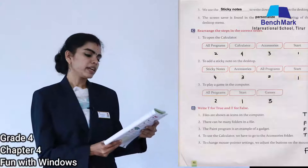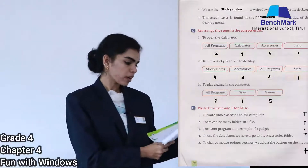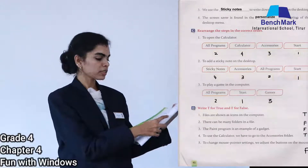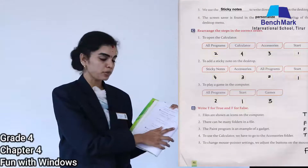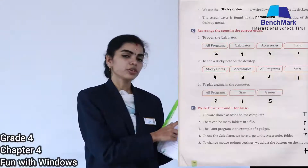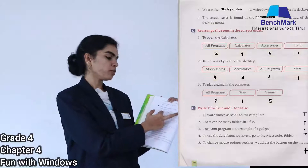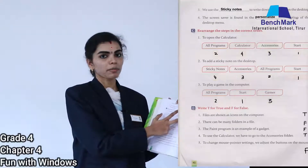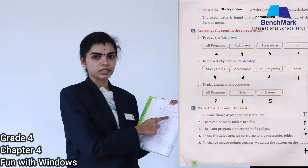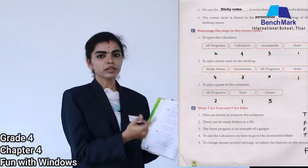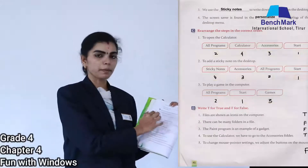To open the calculator, the order is: first click the Start menu, then select All Programs, then select Accessories, and from Accessories click Calculator. You need to number these steps.